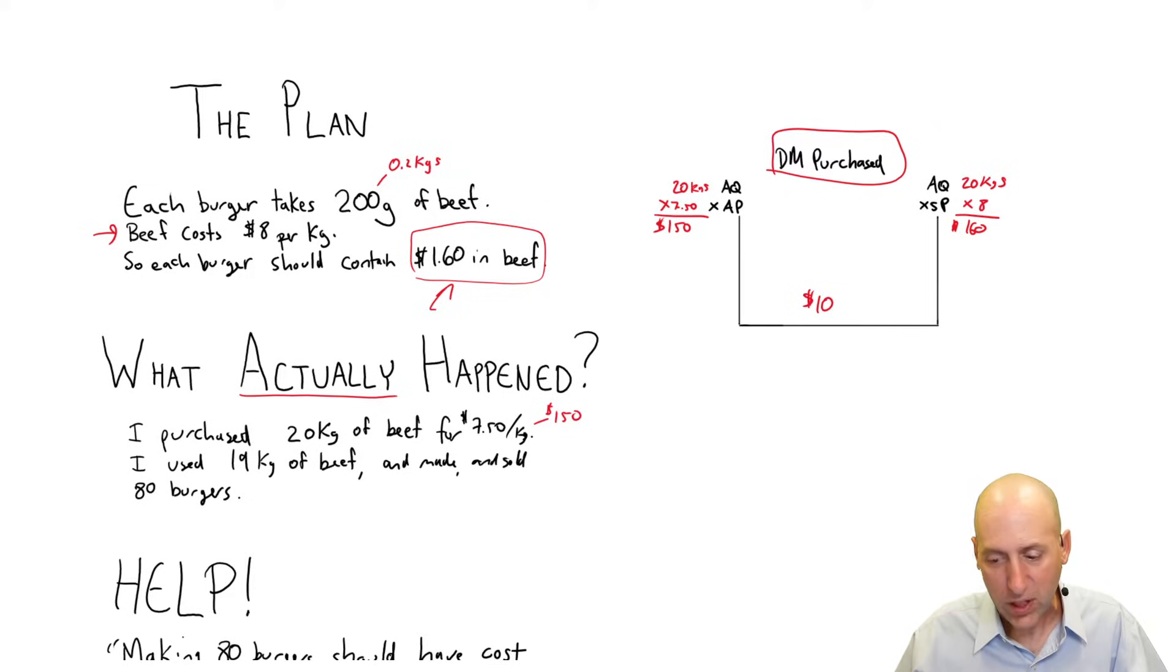The difference here between 160 and 150 is $10. Now, that's the variance. Now we've computed a variance, the name of this variance is the direct materials price variance.